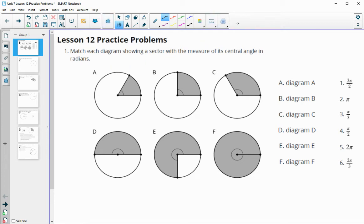In this video, we are going to take a look at the Unit 7 Lesson 12 practice problems. Number one has us matching each diagram showing a sector with the measure of a central angle in radians.